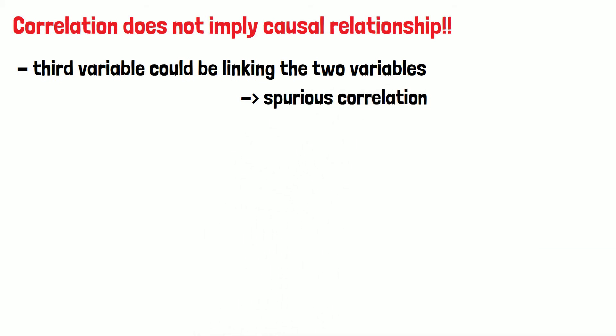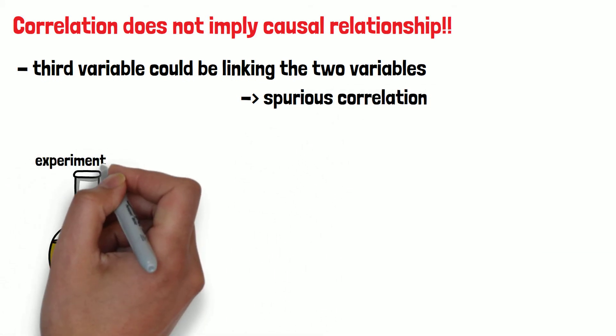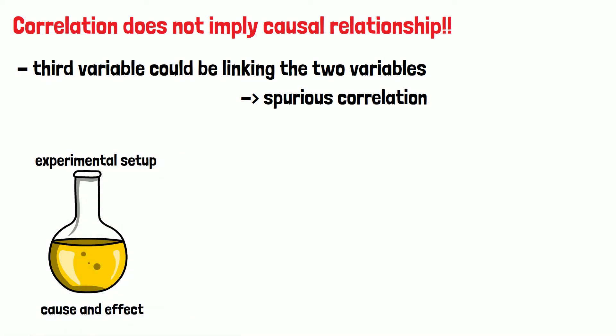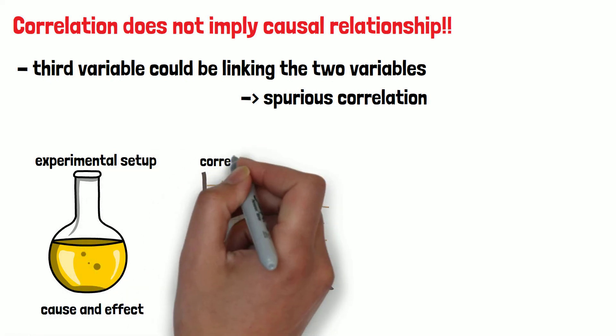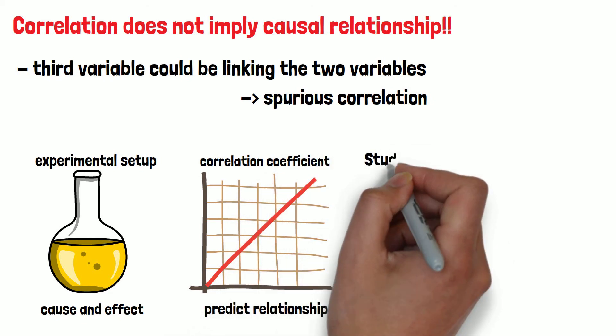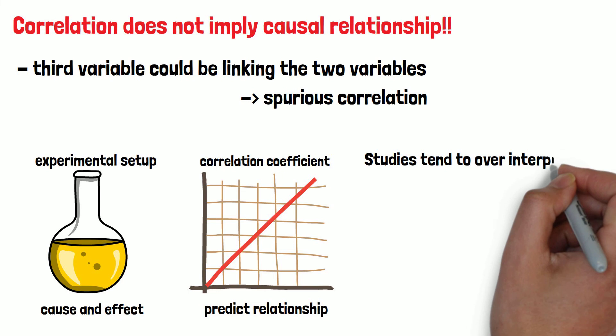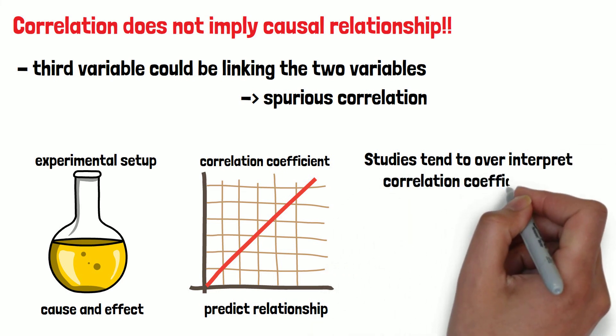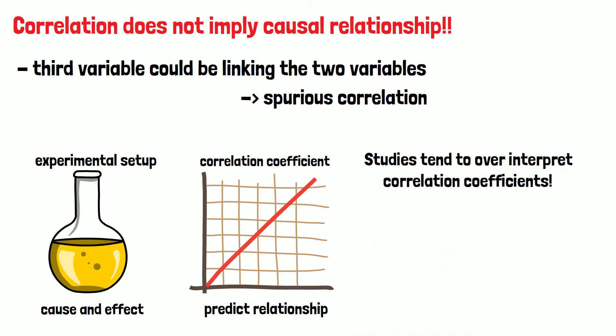An experimental setup can show cause and effect, or causation, but a correlation coefficient can only predict a relationship. Studies tend to over-interpret correlation coefficients, concluding causal assertions wherein only correlational evidence was shown. Furthermore, only a test can show if the correlation is statistically significant.